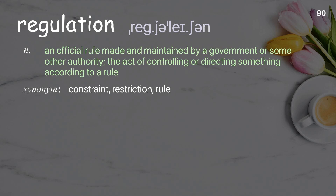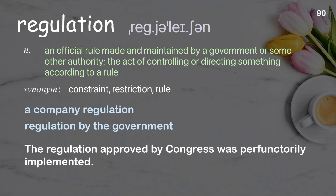Regulation: an official rule made and maintained by a government or other authority; the act of controlling or directing something according to a rule. Examples: a company regulation, regulation by the government. The regulation approved by Congress was perfunctorily implemented.